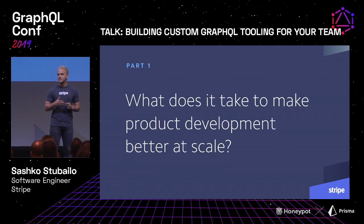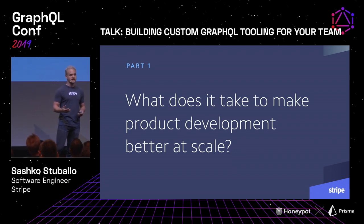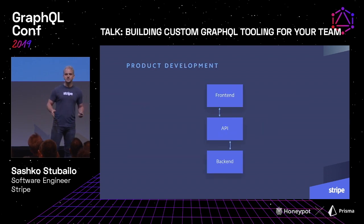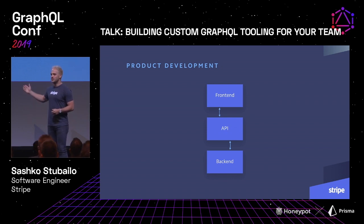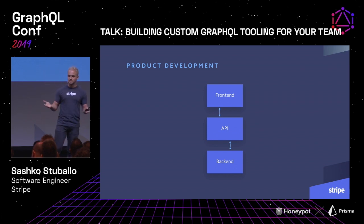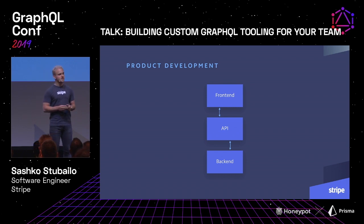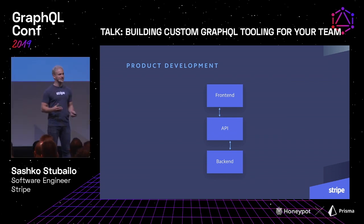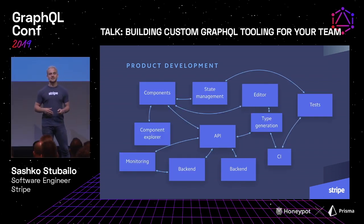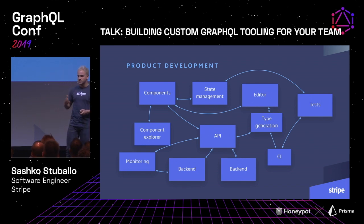I want to talk about what does it take to make product development better at your company and at a larger scale across multiple teams. When people talk about development, they put up one of these diagrams — you've got some data on your back end, you've got your API that makes your data available to the outside world, and you've got a front end that talks to that data and displays it. But we all know that it's not quite that simple.